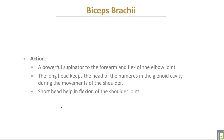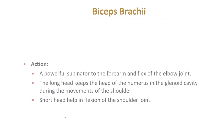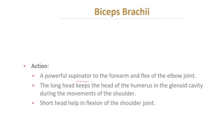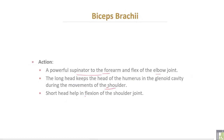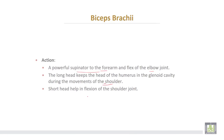The nerve supply for the biceps comes from the musculocutaneous nerve. Action of the biceps: it is a powerful supinator of the forearm and flexes the elbow joint. The long head keeps the head of the humerus in the glenoid cavity during movements of the shoulder joint. The short head of the biceps helps in flexion of the shoulder joint.